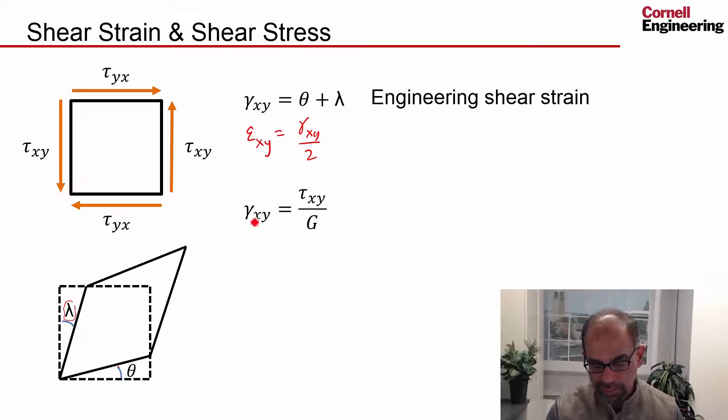And you can relate the shear strain to the shear stress in a linear way, analogous to what we did for the normal strain and the normal stress, and the constant of proportionality is g, which is called the shear modulus. It's analogous to Young's modulus for the normal strains and stresses.